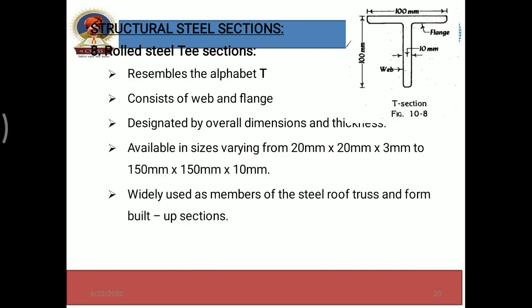Next is rolled steel T sections. The letter T itself indicates a figure — it looks like the alphabet T — and that is why it is termed as a T section.